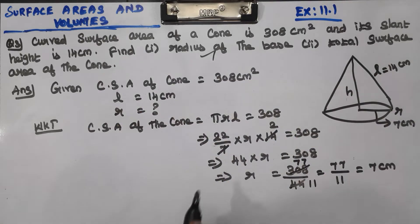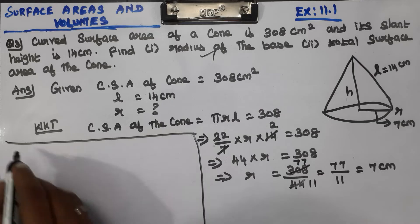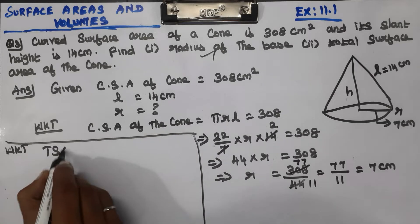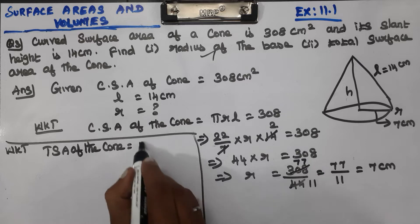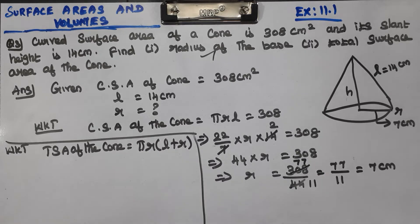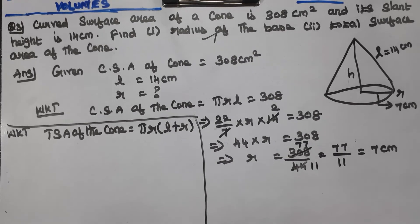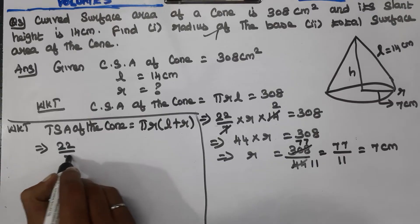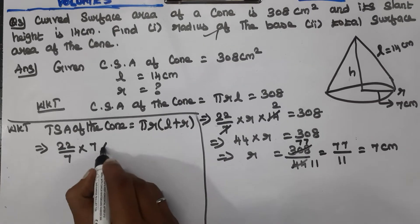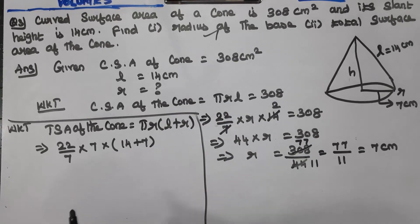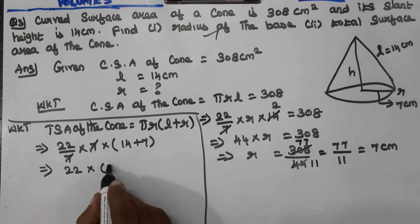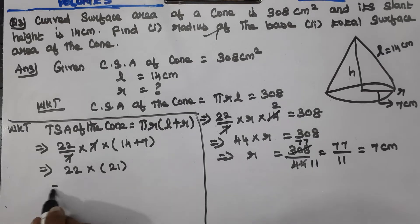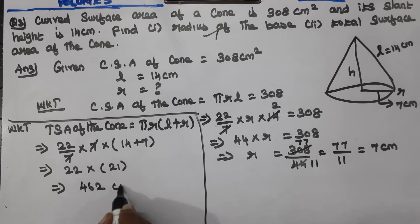Now find the total surface area. Total surface area of the cone — what is the formula? Pi R into (L plus R). So 22 by 7, with the 7 cancelling, we get 22 into (14 plus 7) equals 22 into 21 equals 462 cm².